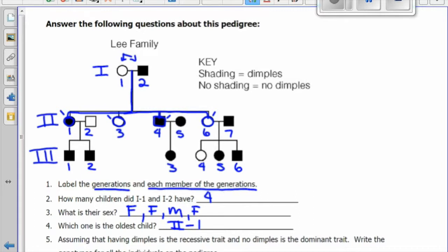Assuming that having dimples is the recessive trait and no dimples is the dominant trait, we're going to write the genotype of all the individuals on the pedigree. We'll start by writing a legend, noting that having dimples is recessive. So we'll use a lowercase d for dimples and a capital D for no dimples.